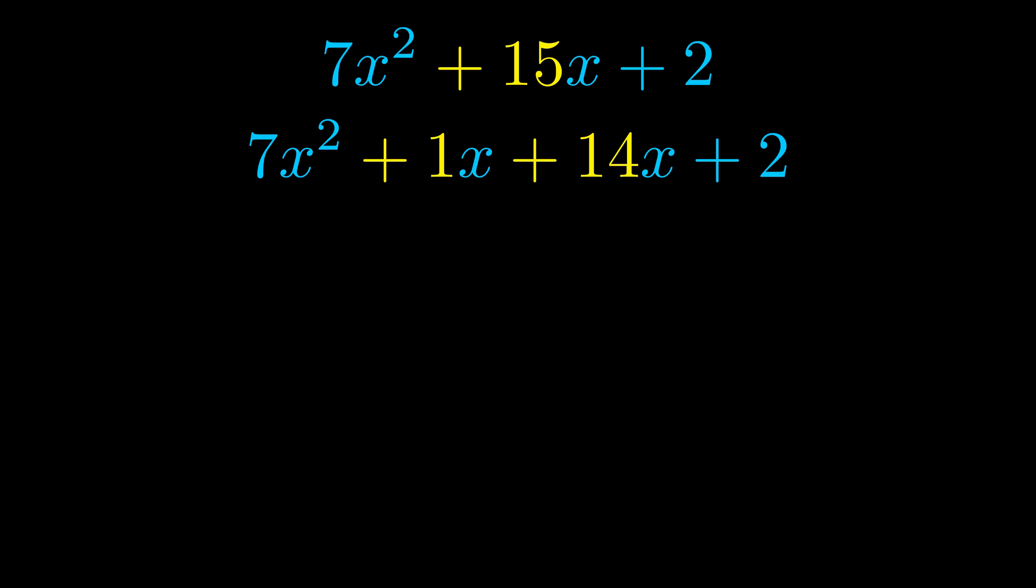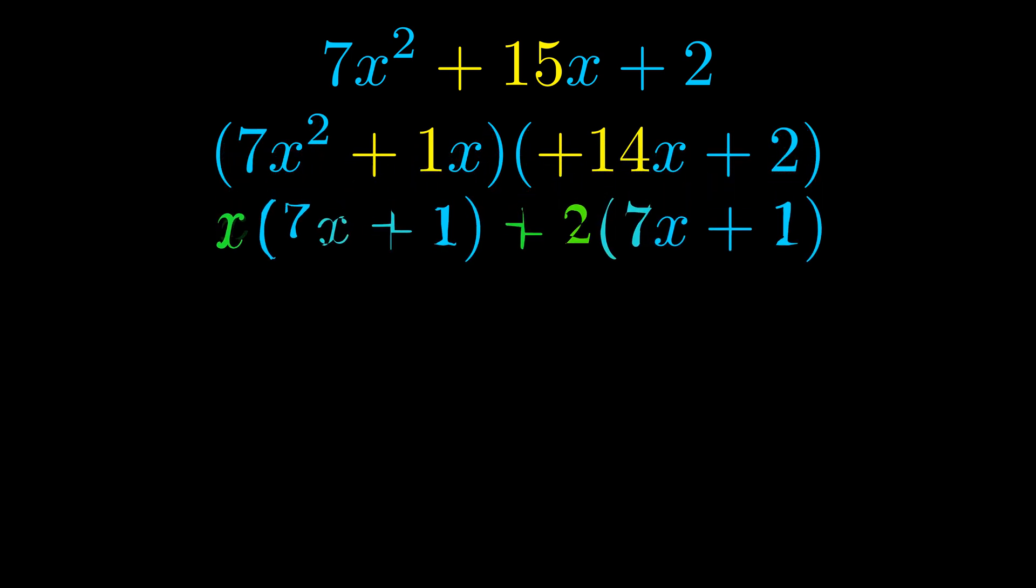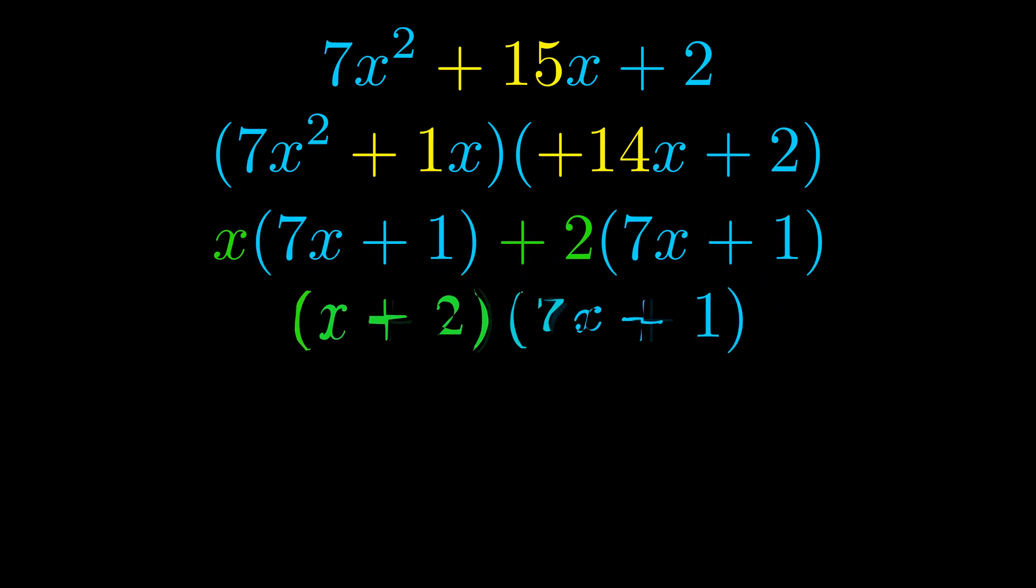Once we've done this we put parentheses around the first term and the last term. And we do that so that we can take the greatest common factor out of both terms. We can see the greatest common factor is now outside in green. Notice also how what remains inside of the parentheses is the same in both cases. The blue values are the same.